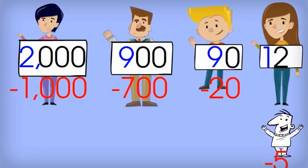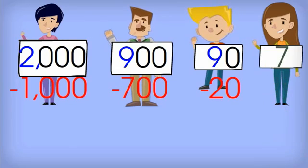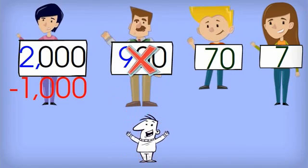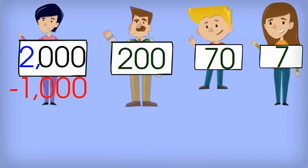So Olivia pays Bill five dollars, leaving her with seven dollars. Ted pays Bill twenty dollars, leaving him with seventy dollars. Hector pays Bill seven hundred dollars, leaving him with two hundred dollars.